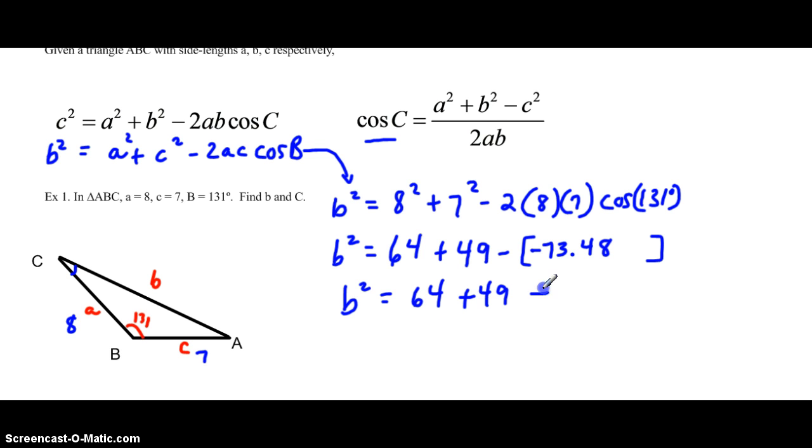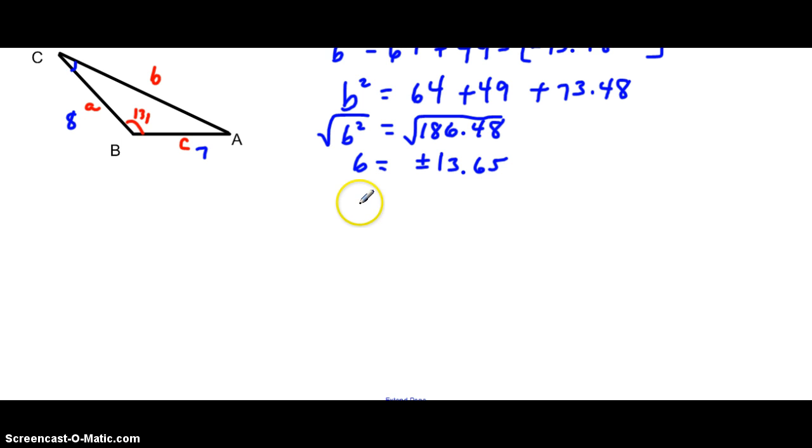So then we would add up all three of those numbers and that would sum to 186.48. We would take the square root of both sides because this is a distance. We're going to have b is going to be equal to 13.7 units. Now IB at the end of every problem wants you to round to three significant digits.